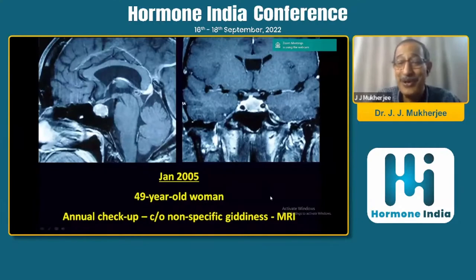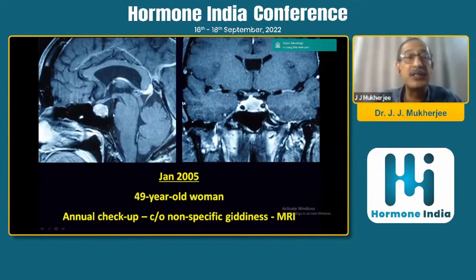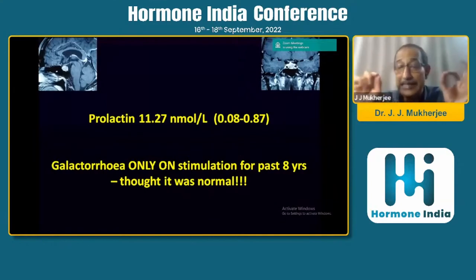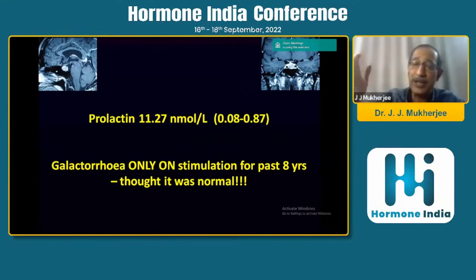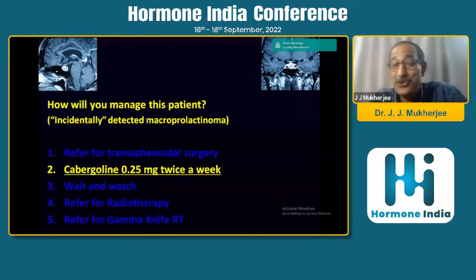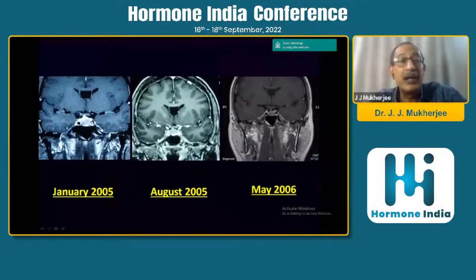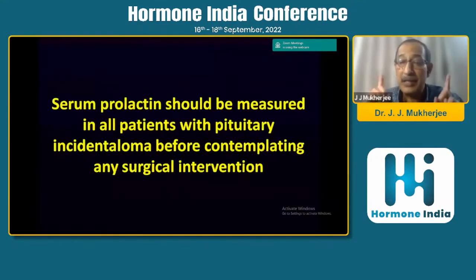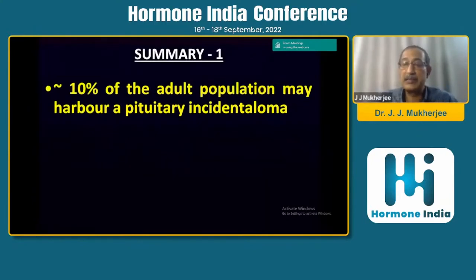Look at this interesting case: a 49-year-old lady who came for an annual checkup with nonspecific giddiness. MRI detected a large macro adenoma, still away from the optic chiasm. Her serum prolactin was almost 12 times elevated, and she had galactorrhea on stimulation for the past eight years from age 41 — she thought it was normal as she was becoming menopausal. Treatment: cabergoline. Over time, this large macro adenoma very nicely shrinks. There's a little fluid accumulation in the lesion — this can happen when you treat a prolactinoma. The lesson: serum prolactin should be measured in all patients with a pituitary incidentaloma before contemplating any surgical intervention.